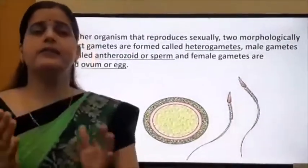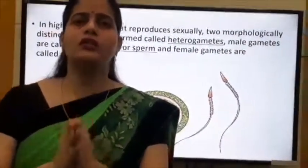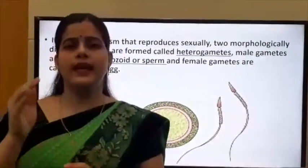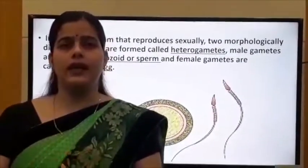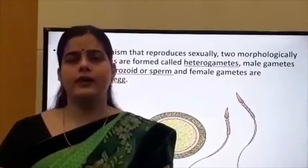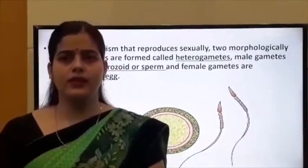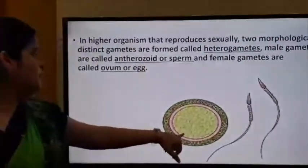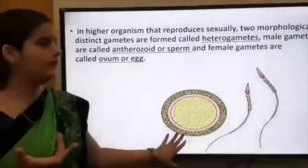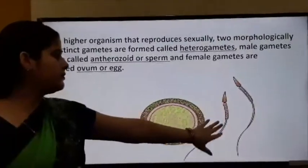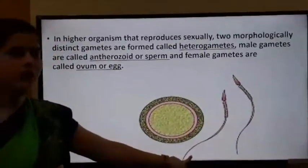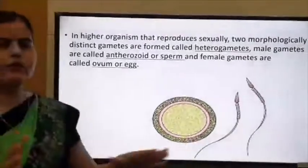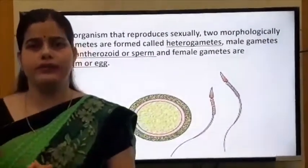Gametes which are dissimilar in structure are known as heterogametes, also called anisogametes. For example, in human beings the male gamete (sperm) has a long structure with a tail, while the female gamete (ovum) is round or spherical in structure. Since they are not similar, they are called heterogametes or anisogametes.